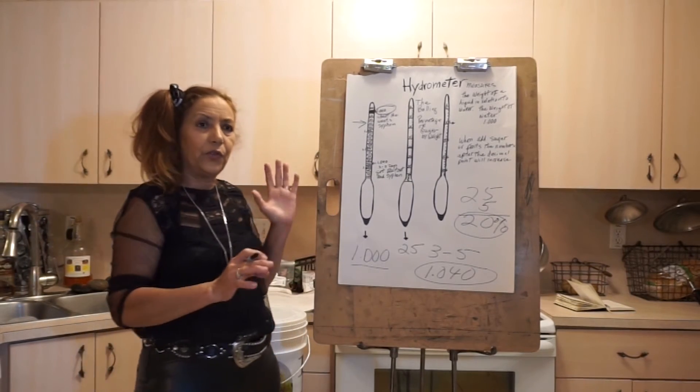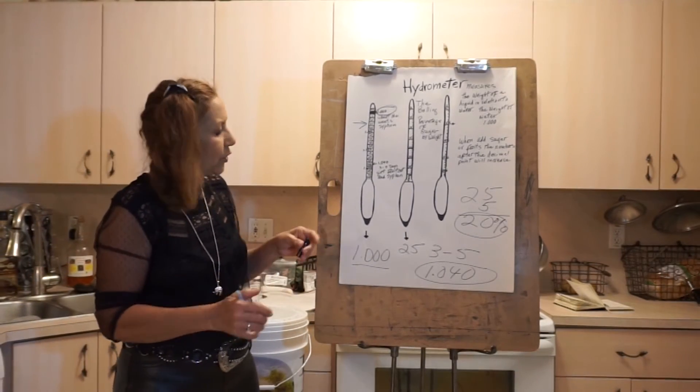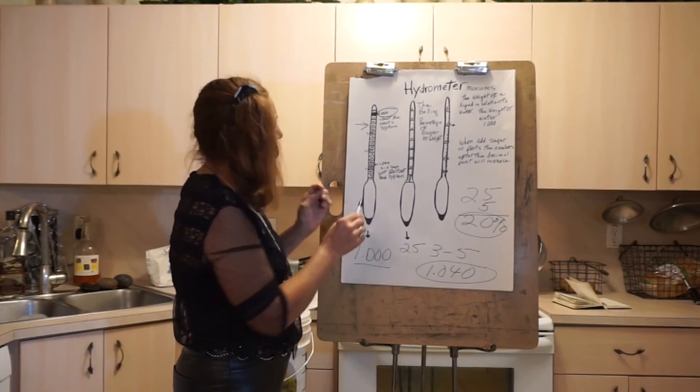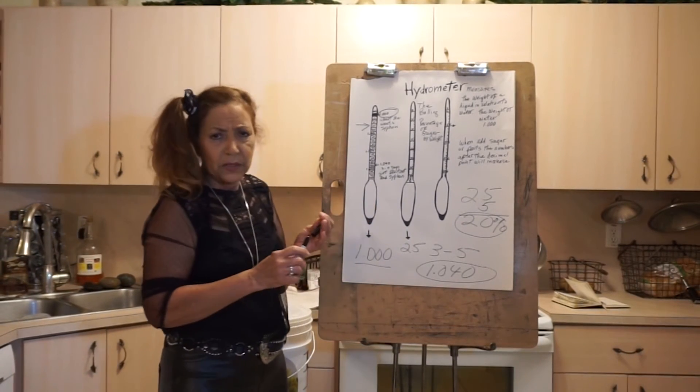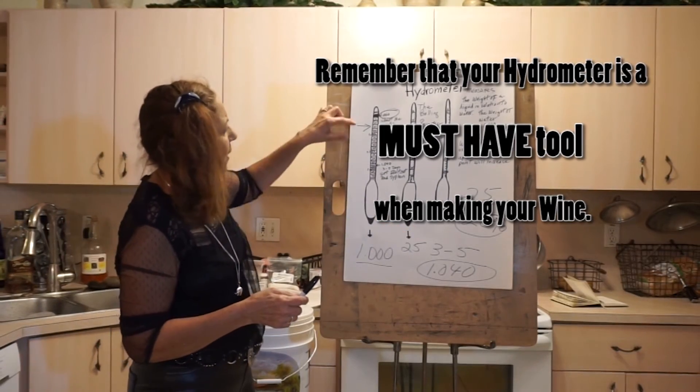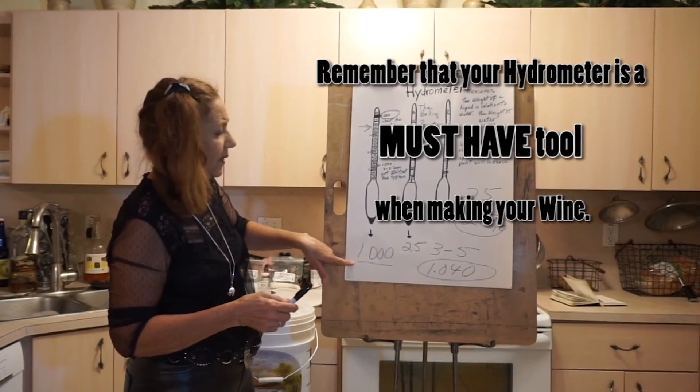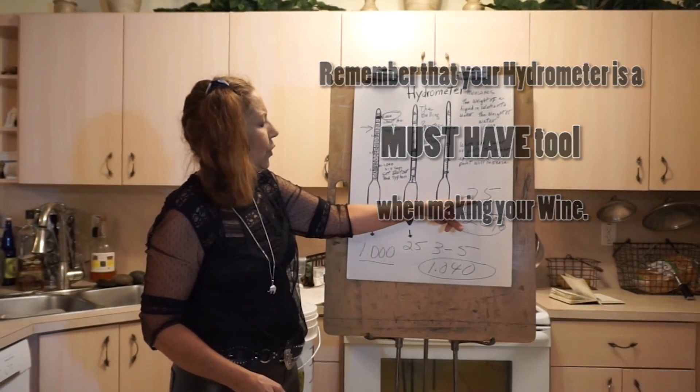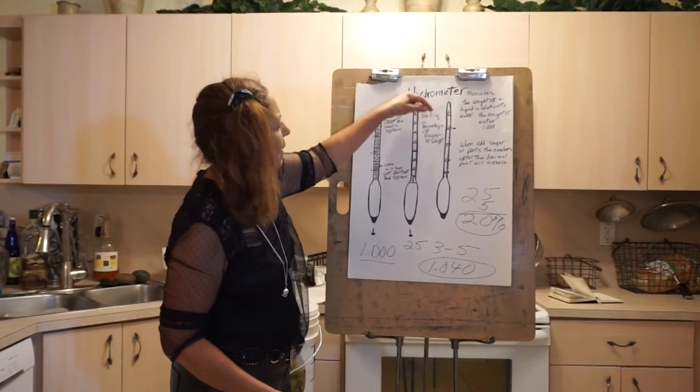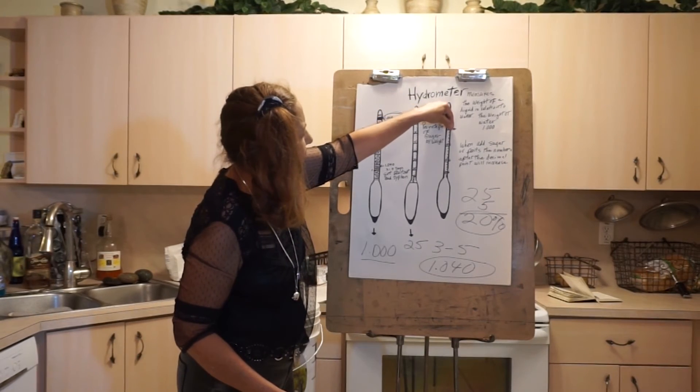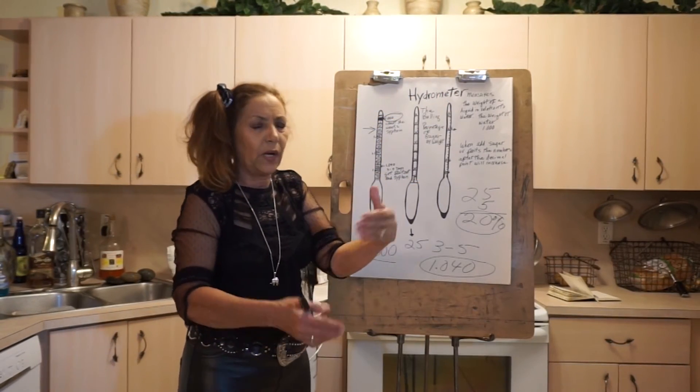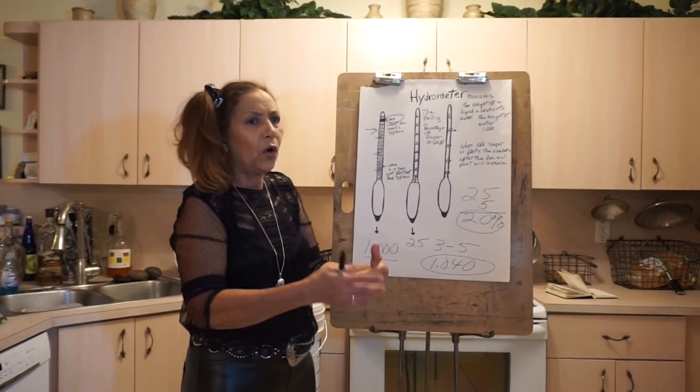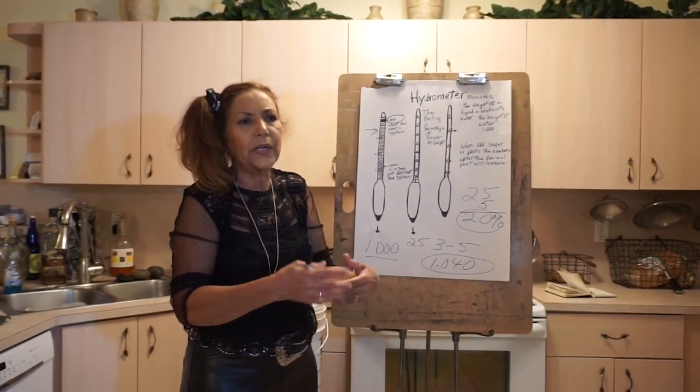This is something you want to have when you buy all your equipment because you need to measure the sugar in the beginning, then the 1.040, then the 1.000 when you have to siphon your wine again. At the end, the sugar that you started, you take away the number the hydrometer is telling you, because during the fermentation process all the sugar converts into alcohol.